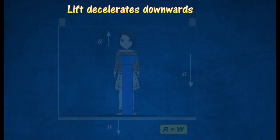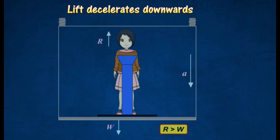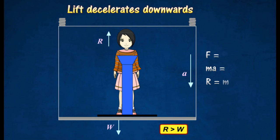If the lift accelerates downwards with a deceleration, the reaction force will be more than the weight of the girl. The resultant force will thus be given by the following equation. The girl will feel heavier.